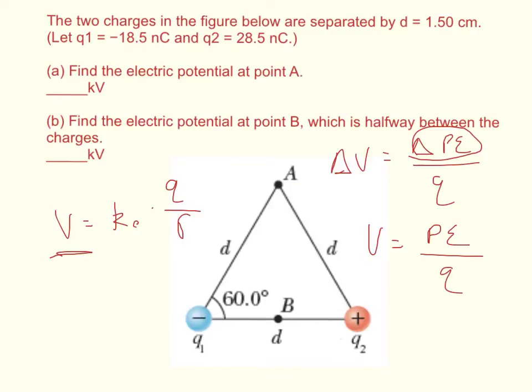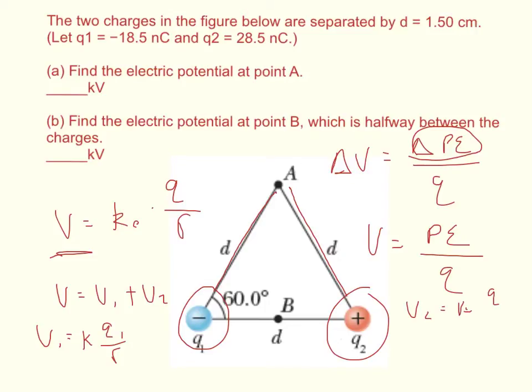And so we'll say that V is equal to V1 plus V2, where V1 is the electric potential that Q1 has on point A, and V2 is the electric potential that Q2 has on point A. So V1 is going to be equal to K times Q1 over R, and V2 is going to be equal to K times Q2 over R.